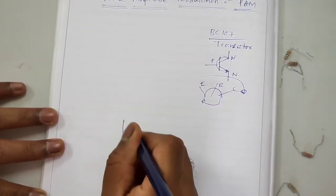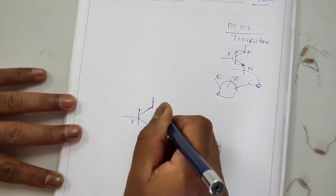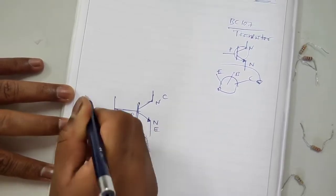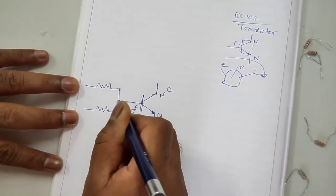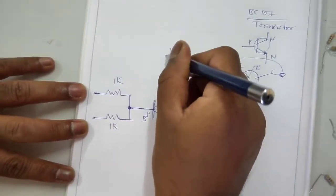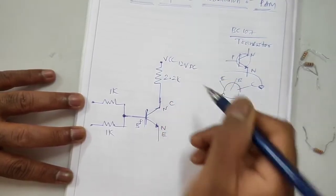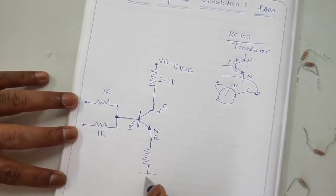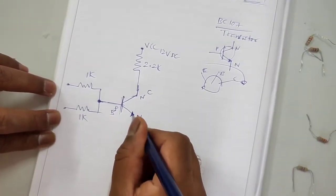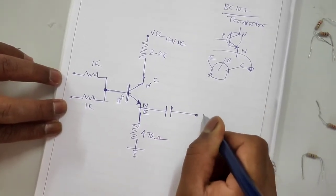For the PAM circuit, this is the NPN Transistor. This is the Emitter, this is the Base, and this is the Collector. At the Base you have to give 2 inputs through 2 resistors - this is the shorting point with 1 Kilo Ohm resistors. At the Collector you apply VCC, 12V DC through a 2.2K resistor. You take the output at the Emitter, where you will get the PAM output.